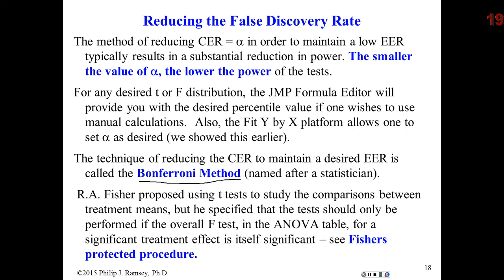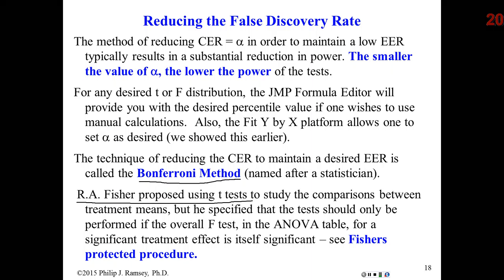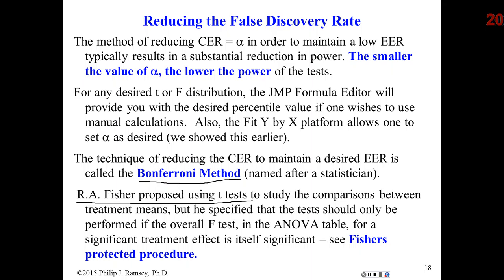Bonferroni's method is still used in different areas of statistics. Overall the method looks good but does come with a price. Fisher, who first looked at this problem — realizing that after rejecting based on the F-test there needed to be some post hoc analysis to decide which groups were different — had what he called his protected procedure. He'd say: first, if the overall F-test in the ANOVA table rejects, suggesting there are real differences, then perform two-sample t-tests between all possible groups to determine which groups might be different.